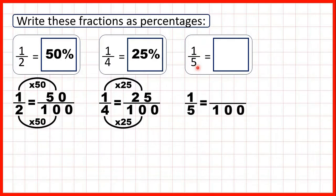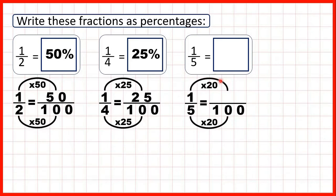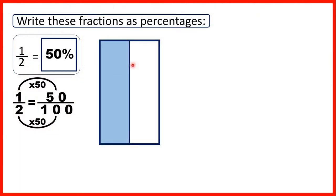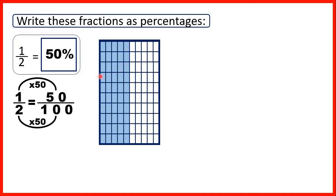Now we have one fifth. Five times 20 is 100, because if we count up in 20s five times we get 20, 40, 60, 80, 100. What we do to the denominator we do to the numerator: one times 20 is 20. So because one fifth is equivalent to 20 hundredths, that's the same as 20 percent. Looking back at one half — one part out of two on our fraction bar — if we split the fraction bar into 100 we can see that we have 50 hundredths, so that's why one half is 50 percent.